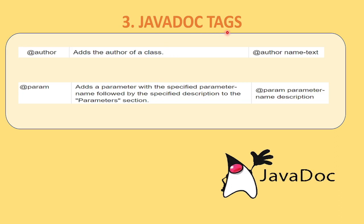Now we will see the different Javadoc tags available. There are many Javadoc tags we can use, but we will discuss only a few which are mostly used. The first tag is the @author tag — it adds the author of the class. Suppose you have written the project on your system and your name is registered on that system. When you use Javadoc generation with the @author tag, your actual name will appear. For example, my name is Aditi, and when I generate the Javadoc with the @author tag, my name will come inside the project documentation automatically.